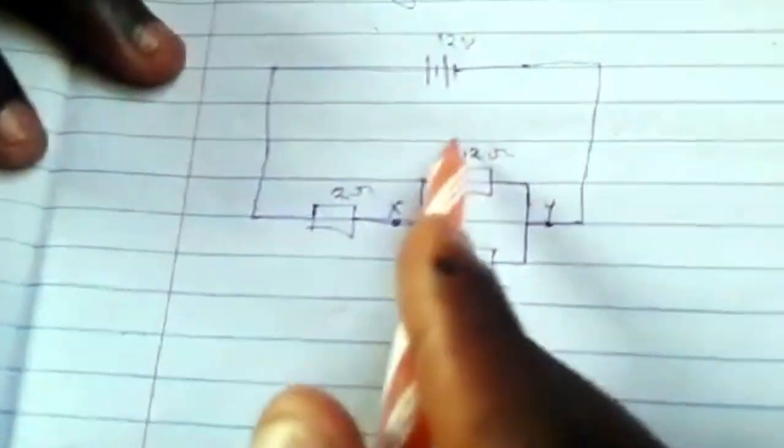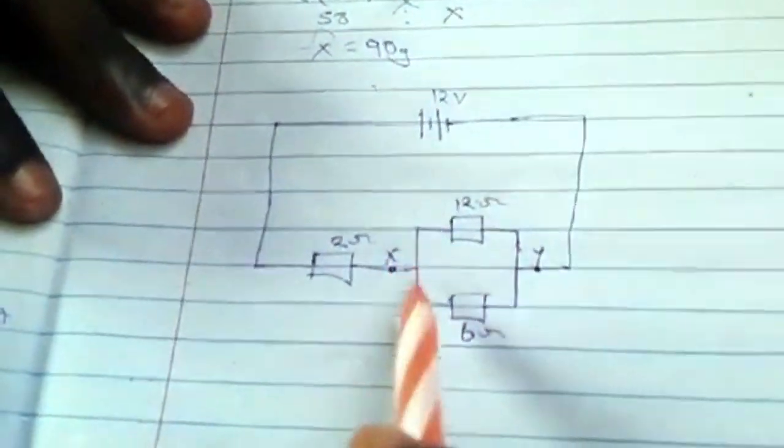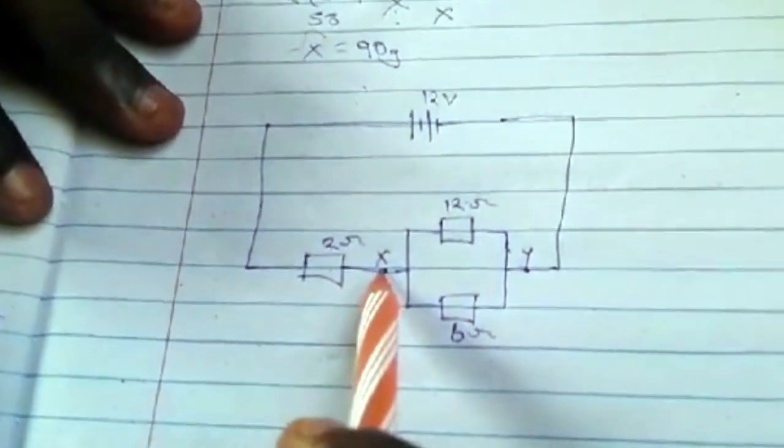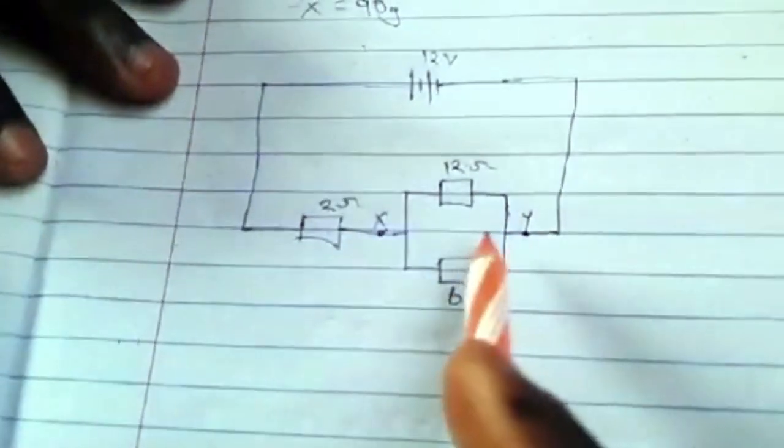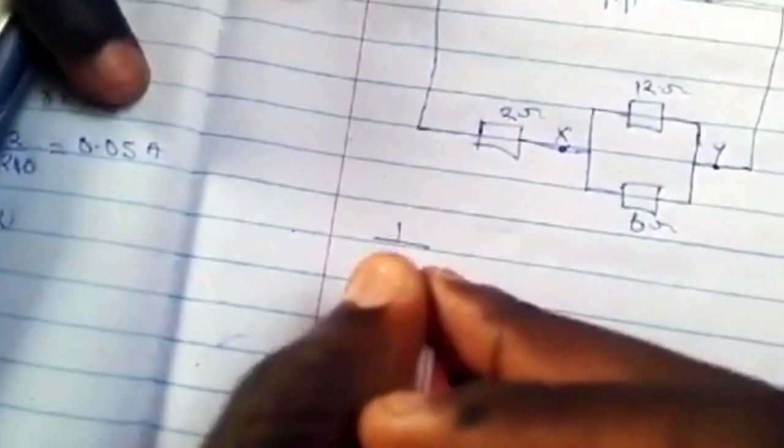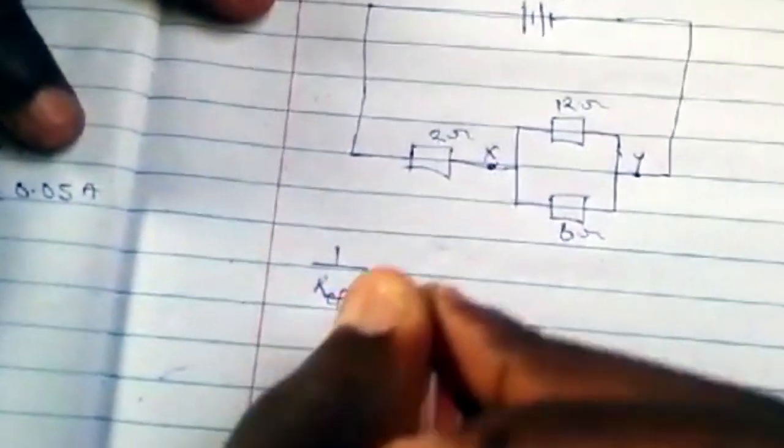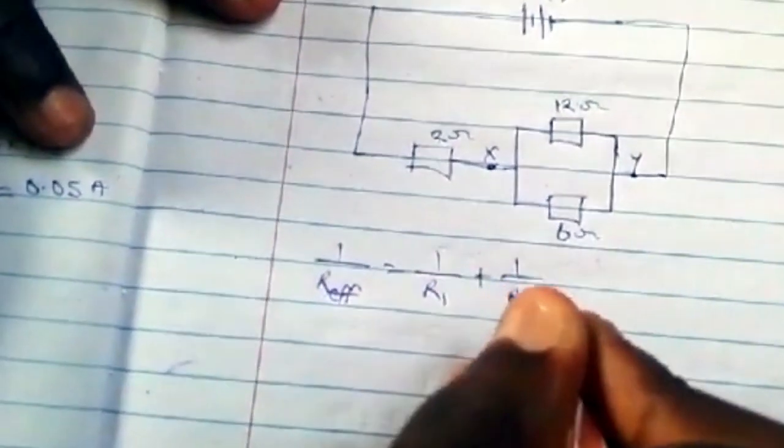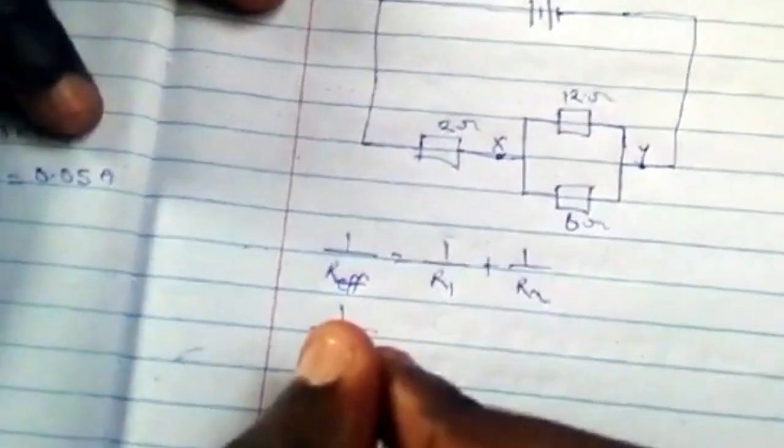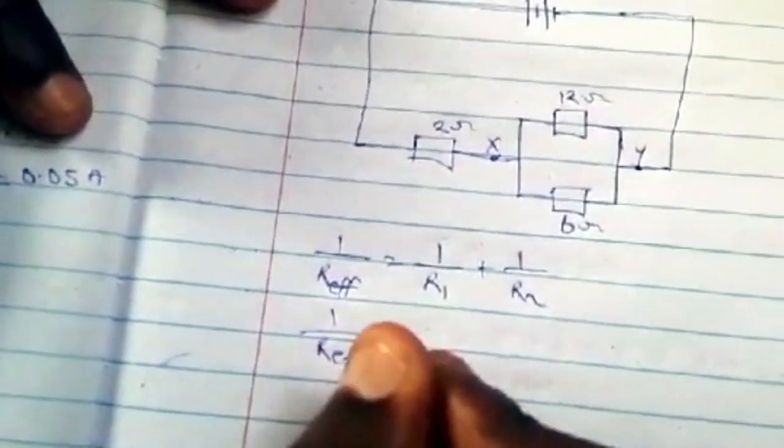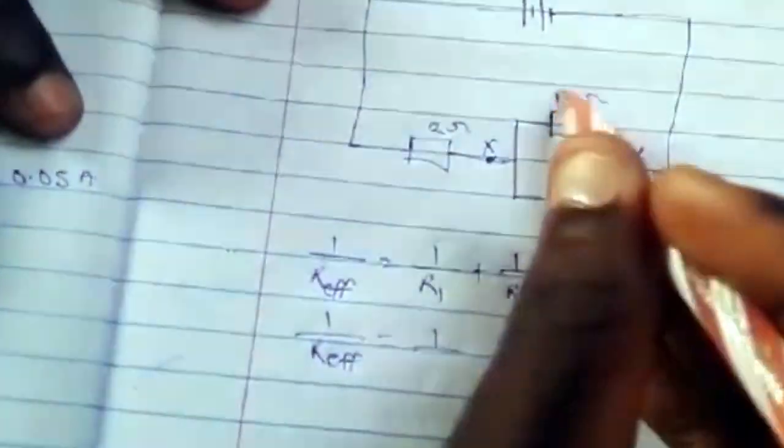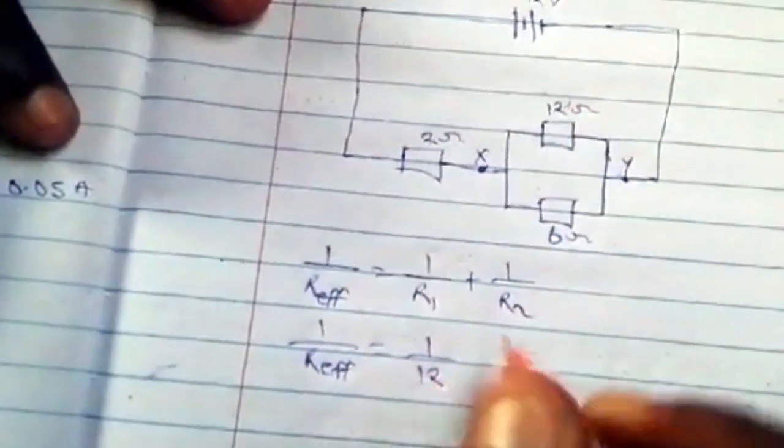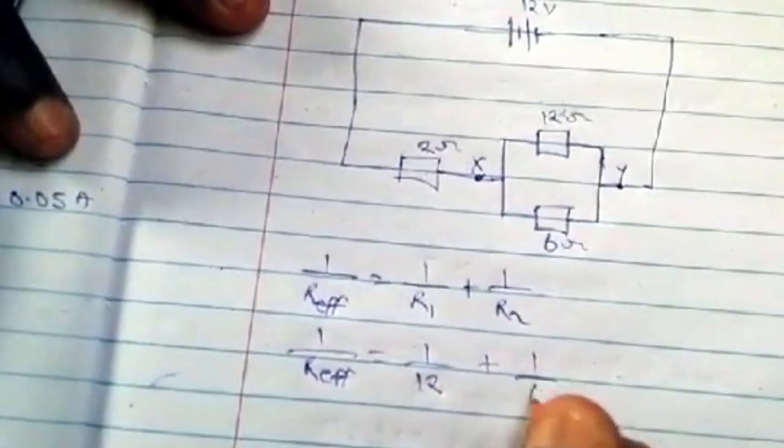We want to find the effective resistance between X and Y. 1 over the effective resistance equals 1 over R1 plus 1 over R2. 1 over R effective equals 1 over 12 plus 1 over 6.